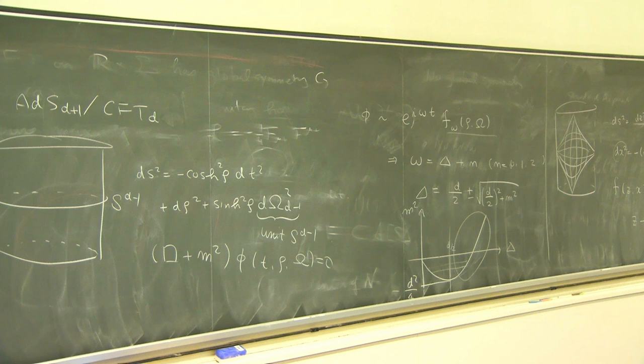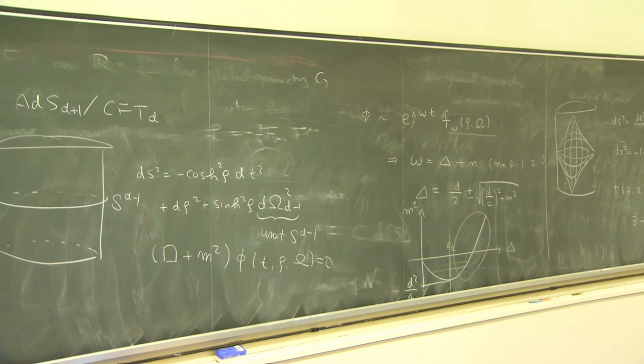This is the case for the scalar field, but you can do the same thing for gauge fields, metric, and so on. This is a very quick summary of aspects of AdS/CFT correspondence that I'm going to use — I presume many of you know this, but this is just to set up notation.